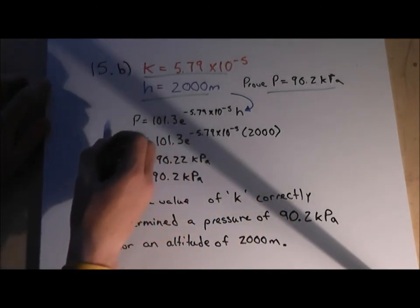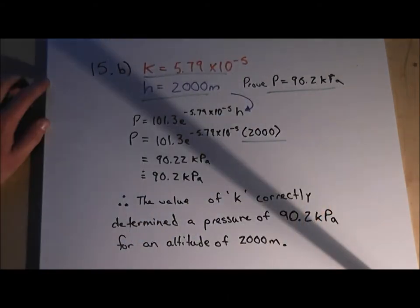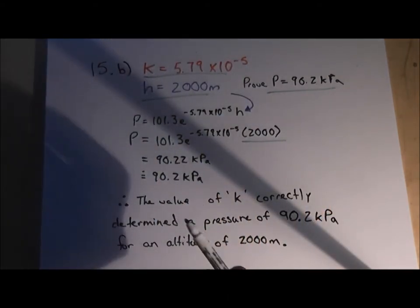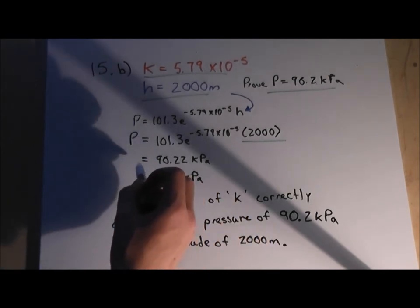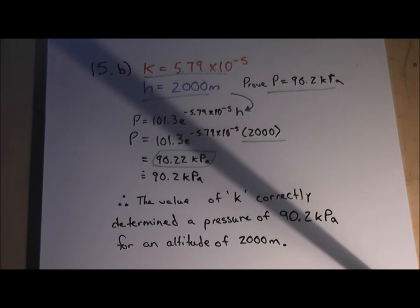Like I said, we simply sub in our values, as seen there. And now, we put these numbers into our calculator. And we get an answer of 90.22 kilopascals, roughly 90.2 kilopascals. And therefore, to finish off this question, therefore, the value of k correctly determined a pressure of 90.2 kilopascals for an altitude of 2,000 meters.